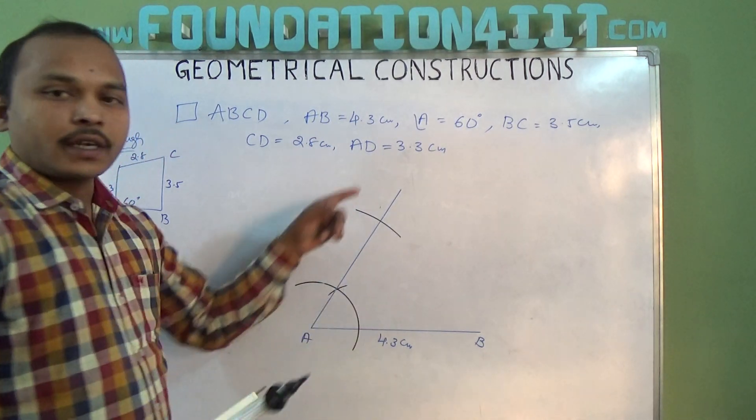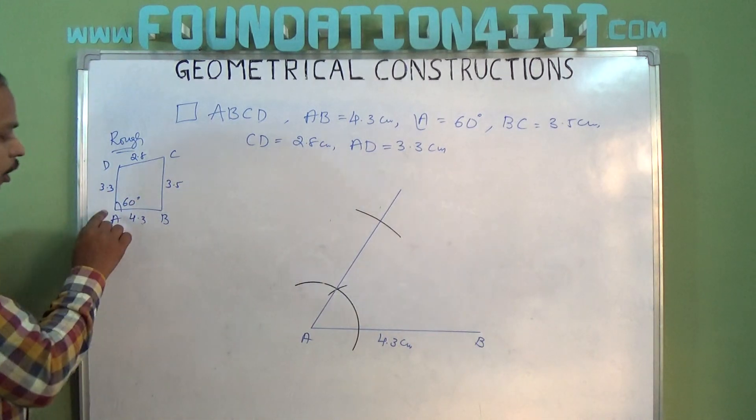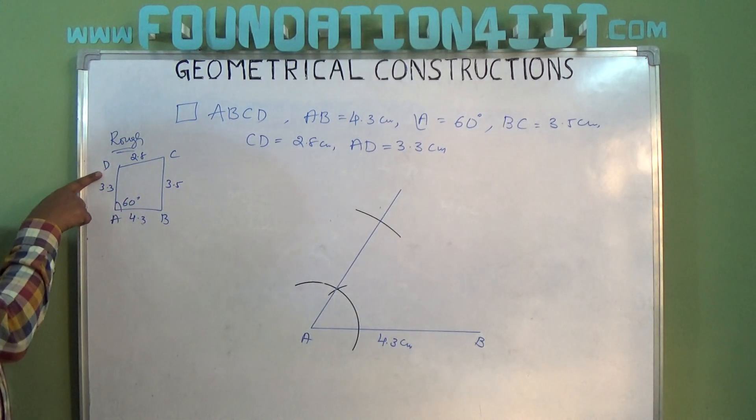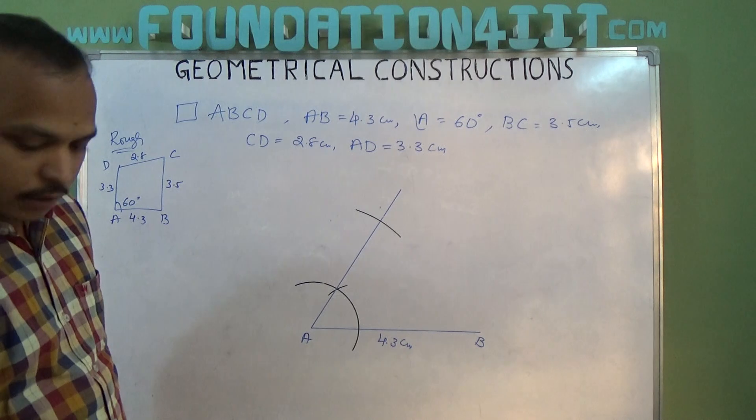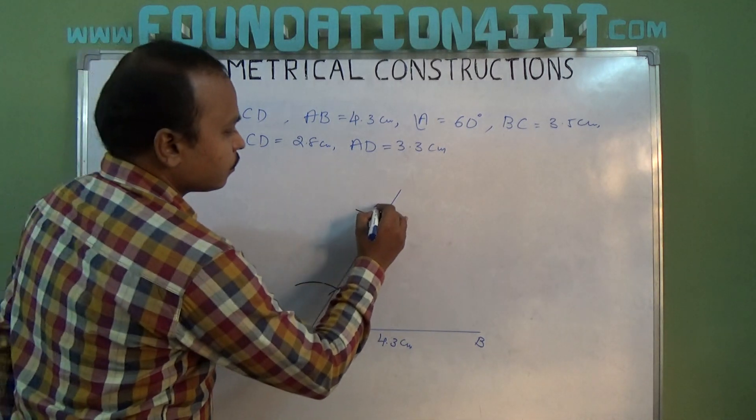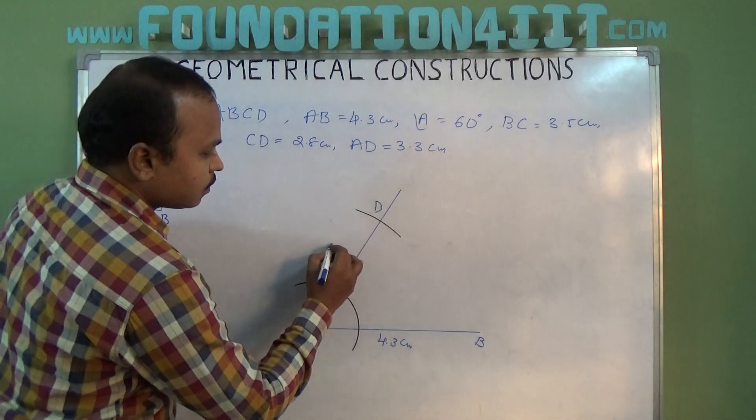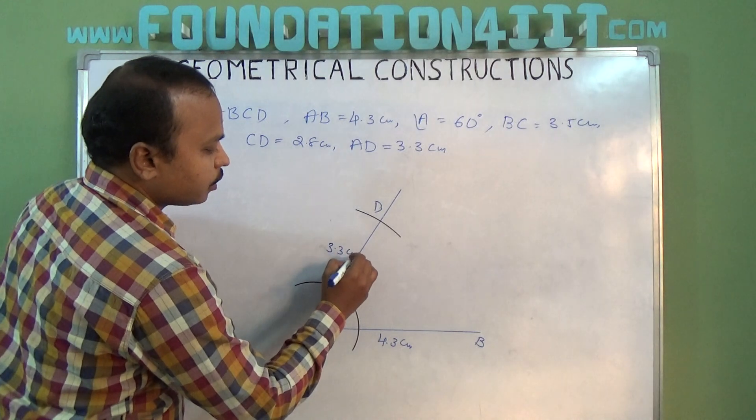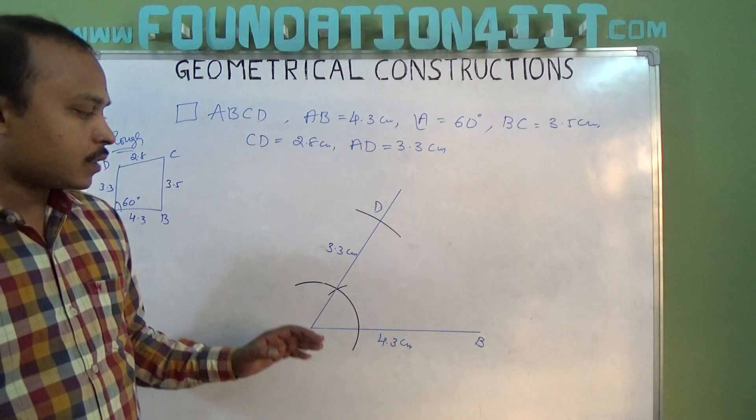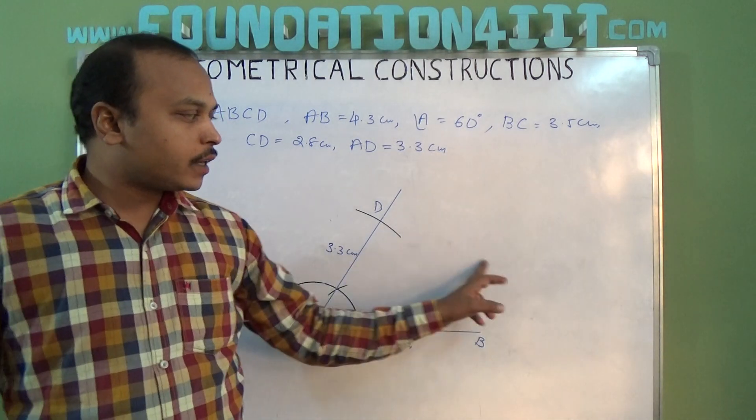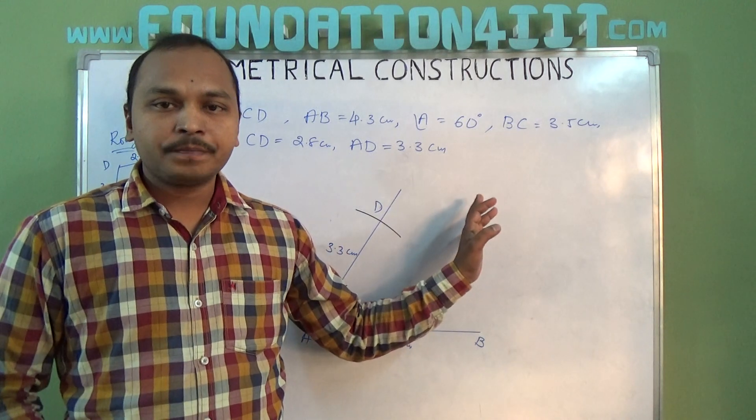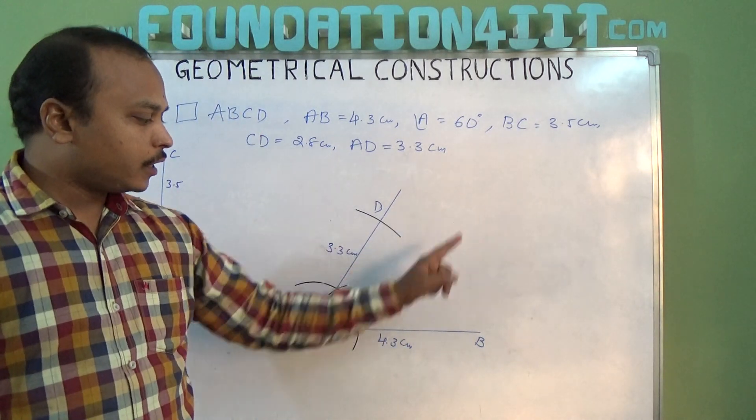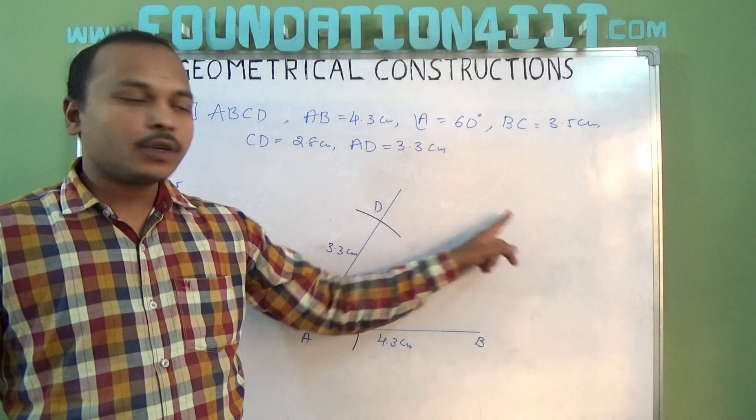From A, cut the arc on this line because we know A to D is only 3.3 centimeters. Now that is D. A to D is 3.3 centimeters. Next, somewhere here vertex C is there.